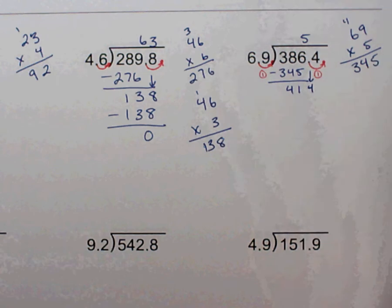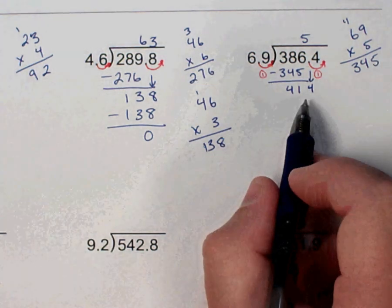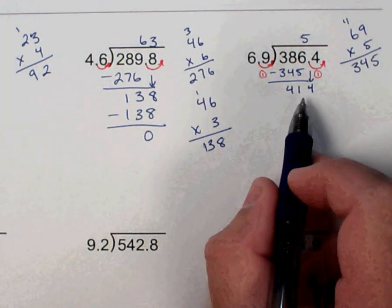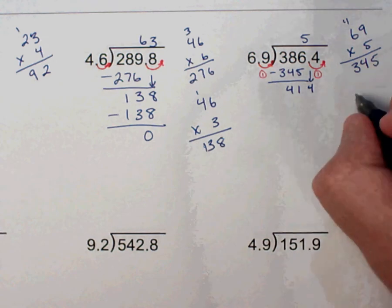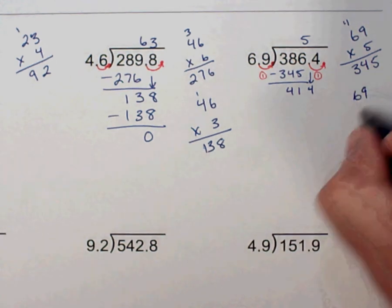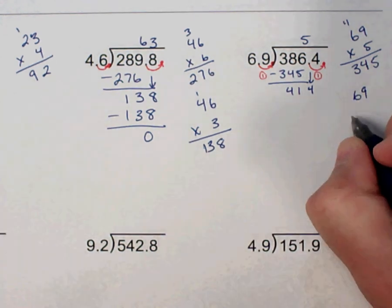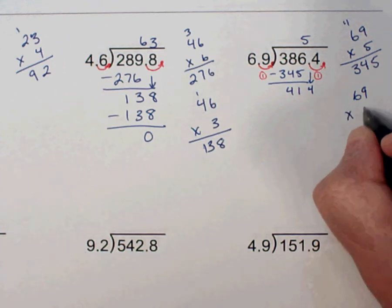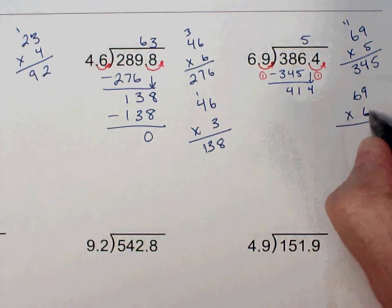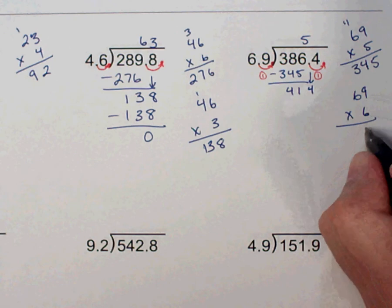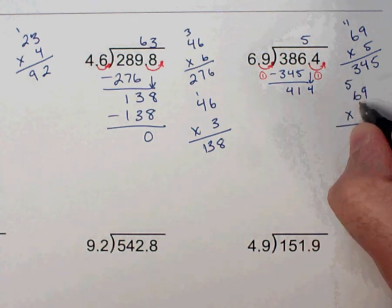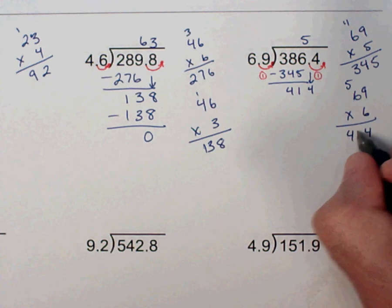Pull down my 4 here. So how many times does 69 go into 414? I'm thinking...I think that's going to be 6 times. But let's do the math and check. So 9 times 4 is going to give me 54. 6 times 6 is 36 plus 5 is 41. So yes, it is.